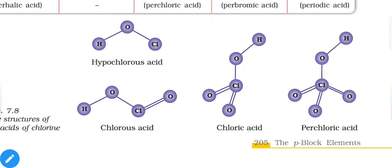Looking at the structures: hypochlorous acid has only one OH group; chlorous acid has one OH and one double-bonded O; chloric acid has one OH and two double-bonded O; and perchloric acid has one OH and three double-bonded O. Since all of them have only one OH group or one hydrogen, all of them will be monobasic.